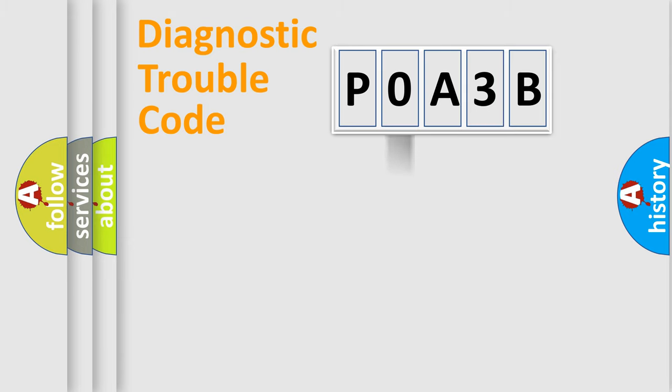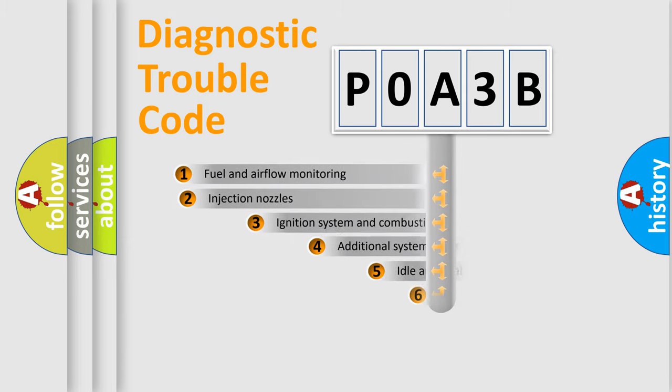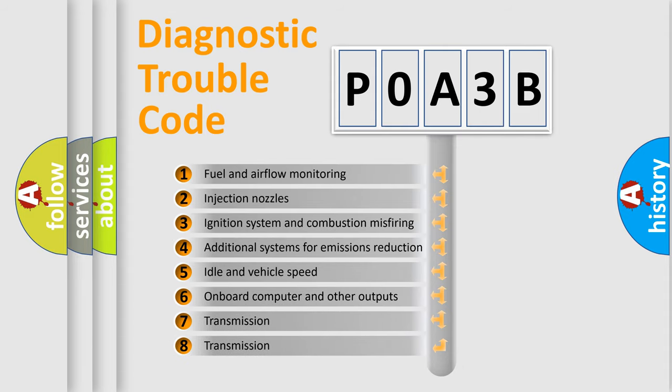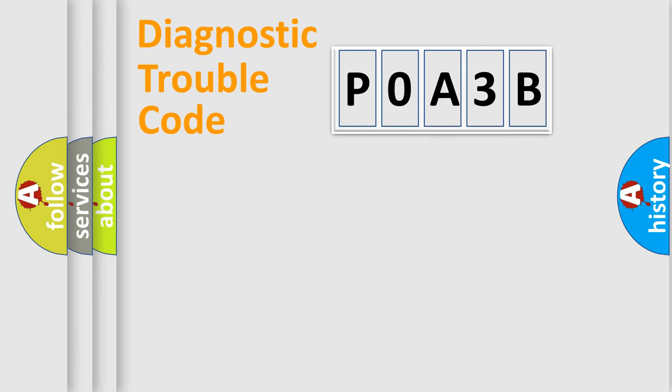The third character specifies a subset of errors. The distribution shown is valid only for the standardized DTC code. Only the last two characters define the specific fault of the group.